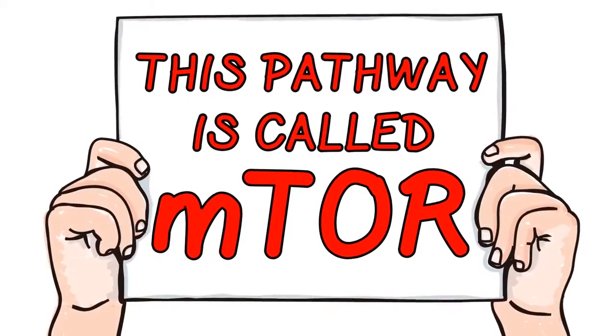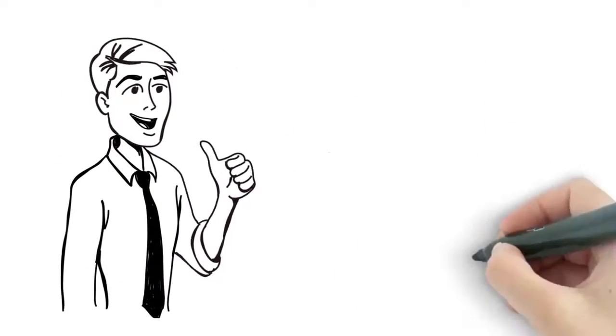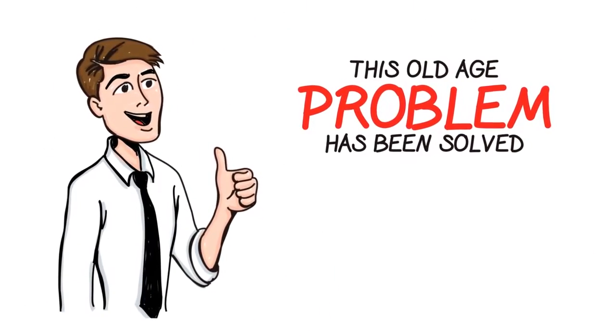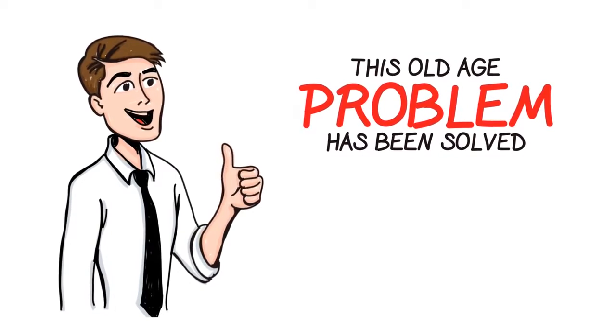That pathway that amino acids must pass through to reach the muscle is called mTOR. The solution to opening the pathway so that complete amino acids can pass into the muscle has been found.